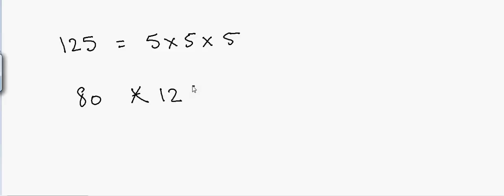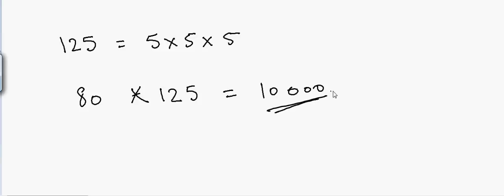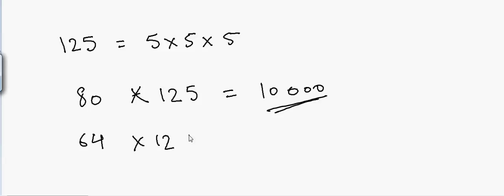80 divided by 8 equals 10, and then put three zeros at the end — so 80 × 125 = 10000. For 64 × 125: since 8 × 8 = 64, we get 64 divided by 8 = 8, and then put three zeros at the end.